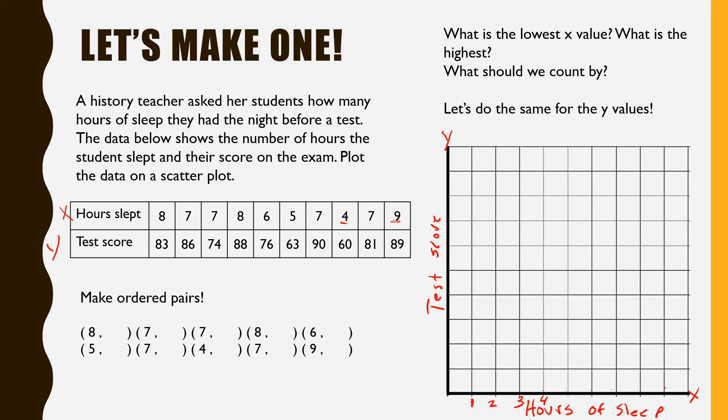One, two, three, four, five, six, seven, eight, nine, ten. Then my lowest here is a 60 all the way to 90. So I count my tens, 10, 20, 30, 40, 50, 60, 70, 80, 90, 100.